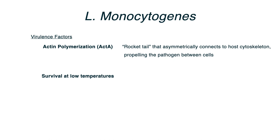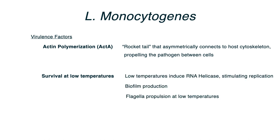Listeria becomes really good at surviving and replicating at low temperatures. At low temperatures, Listeria induces RNA helicase — when it senses cold, RNA helicase activity speeds up, stimulating replication. It also produces biofilms, and has a powerful flagella that is especially active at low temperatures. So when you refrigerate something that could have Listeria in it, you're actually encouraging its growth. Keep in mind: deli meats and unpasteurized dairy products.